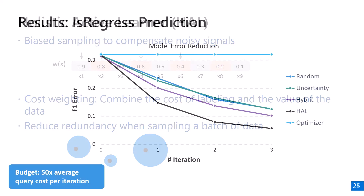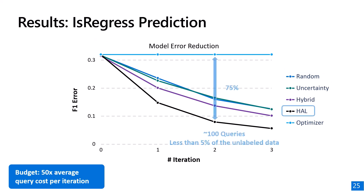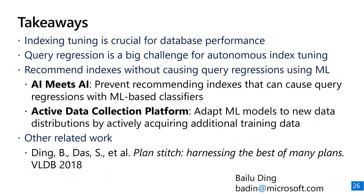Here we show the result of predicting query regressions on a new database. Without model adaptation, the F1 error is 0.32. By selecting only 100 queries, or less than 5% of the data, our approach reduces the F1 error by 75%. To conclude, index tuning is crucial for database performance and query regression is a big challenge for operationalizing autonomous index tuning. This talk described how to recommend indices without causing query regressions using machine learning, and how to acquire additional data economically to improve model performance under new data distributions. I'm happy to take questions.